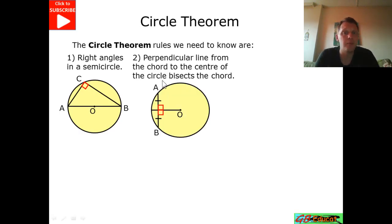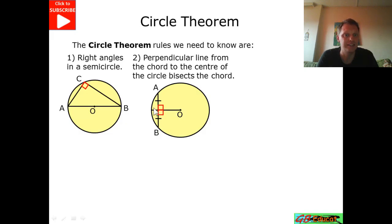If we've got a perpendicular line from a chord to the centre of the circle, this is going to bisect the chord — it's going to split the chord in half.